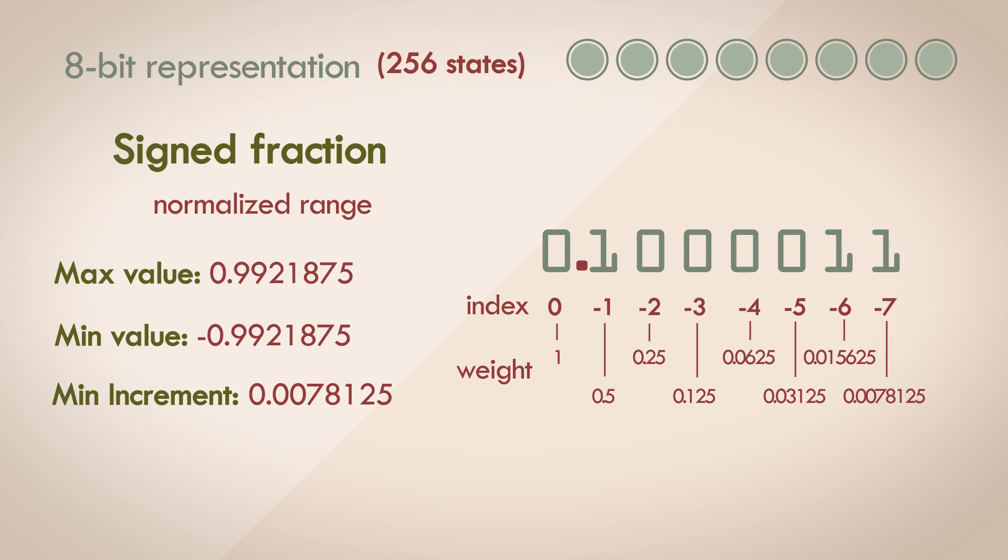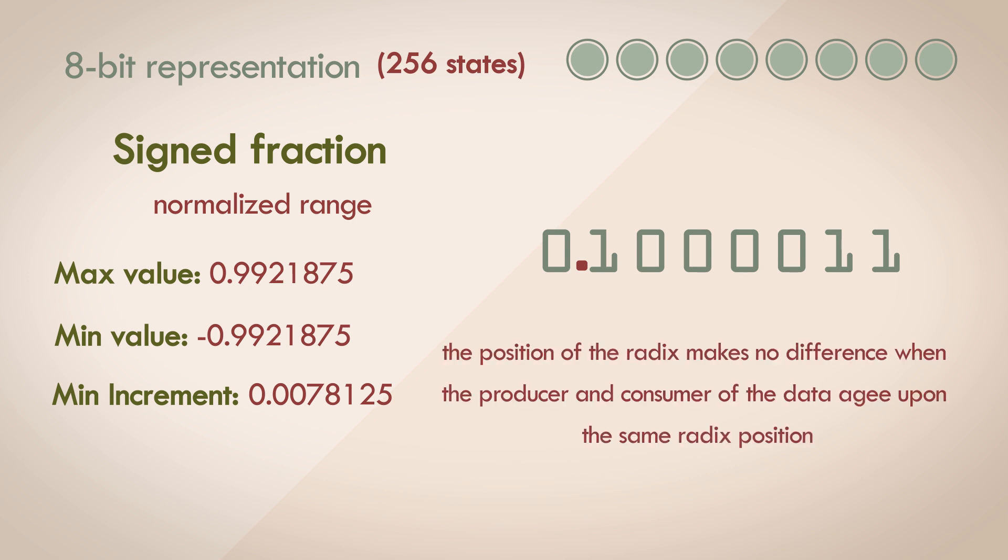Fractional parts are particularly hard to get a handle on from the lens of a different number system. But look at this number in binary. It's simple and computable for a computer. In fact, the position of the radix makes near to no difference when the producer of the data and the consumer of the data agree upon the same position for the binary point beforehand. It could be here, here, or here. The range may vary, but the arithmetic operations on it stay consistent irrespective of where the radix is. More about this later.